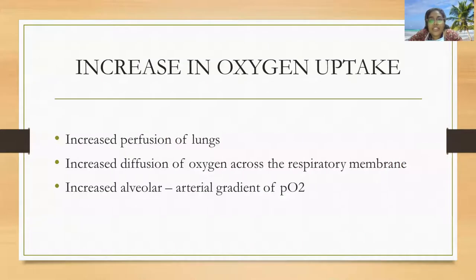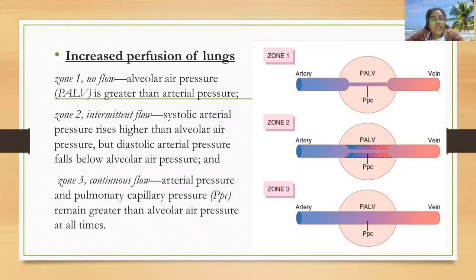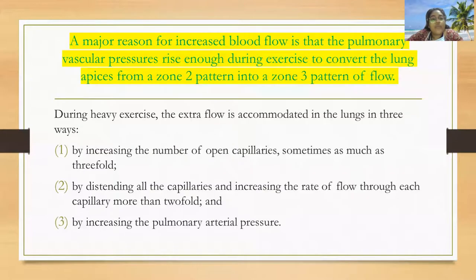The next point is increase in oxygen uptake, explained by increased perfusion of the lung, increased diffusion of oxygen across the respiratory membrane, and increased alveolar-arterial gradient of PO2. Regarding increased perfusion, there are three zones. Zone 1 is no flow, where alveolar air pressure is greater than arterial pressure — not found in normal lungs. Zone 2 is intermittent flow, where systolic arterial pressure rises higher than alveolar pressure but diastolic falls below, mostly found in apical regions. Zone 3 is continuous flow, where arterial and pulmonary capillary pressure remain greater than alveolar air pressure at all times. During exercise, pulmonary vascular pressure rises enough to convert the lung apices from a zone 2 pattern into a zone 3 pattern of flow.